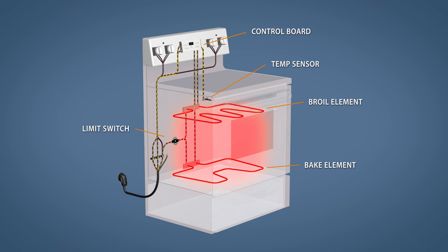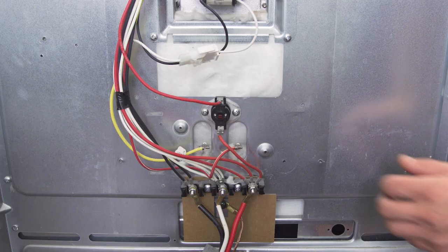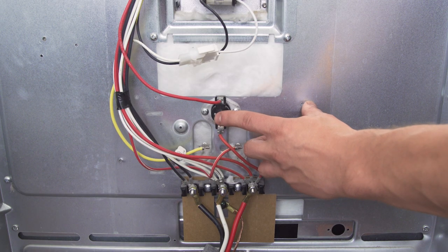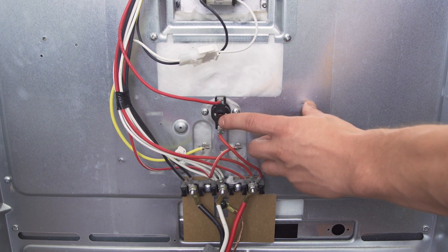Limit switches are overload protection devices. If the temperature gets too high the limit switch will open disconnecting power. Some limit switches will reset automatically, while others will use a reset button.